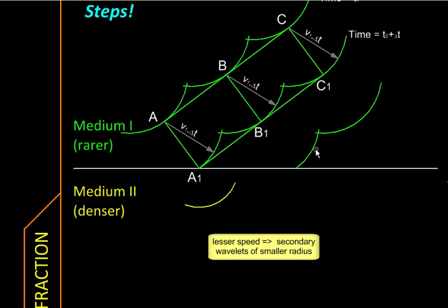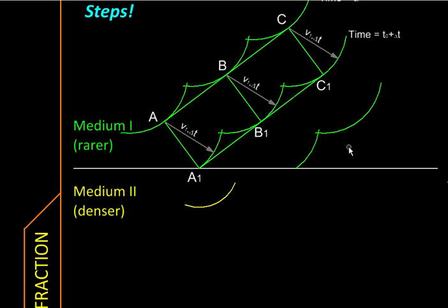And therefore the wavelets will not have the same radius. Here the radius will be less while these two will have a greater radius. And now if we draw a common tangent or try to draw a common tangent to represent the new wave front, we will not get a single straight line but rather we would get two straight lines - a wave front here and a wave front here. So now you have seen that our wave front is not flat anymore. It has bent. It has curled.